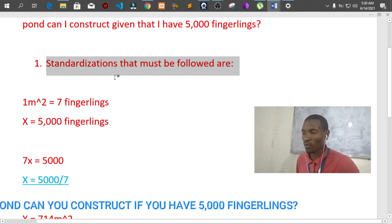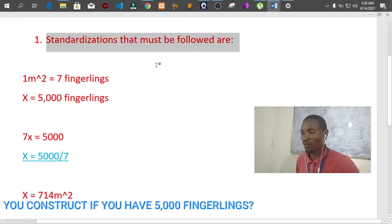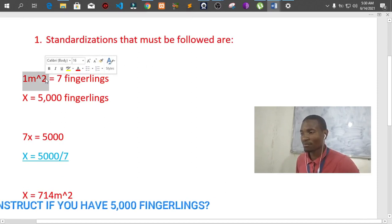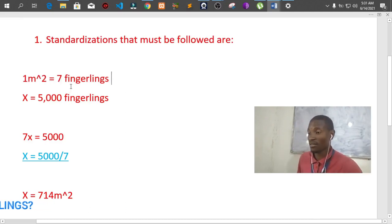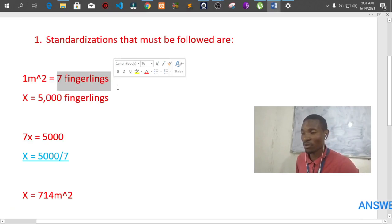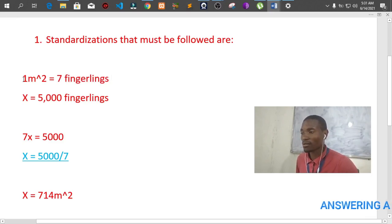So the first thing that you must follow is that per meter square, this is the starting point. The meter square is that we need seven fingerlings. Of course there are people who are putting eight, nine, ten, and I think ten people are taking ten to be the maximum. For me, I'm calculating based on the minimum of seven. I think that should be able to assist us and help us when it comes to our pond management.